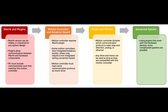Mach 4 uses plugins to communicate with a motion controller. In order to facilitate that communication, you must use a computer with communication ports that are compatible with your motion controller. For example, if your motion controller uses an ethernet connection, make sure the computer you buy has an ethernet port. When choosing a motion controller, make sure it has a Mach 4 specific plugin available, as Mach 3 plugins will not work with Mach 4.